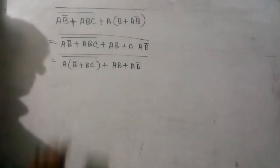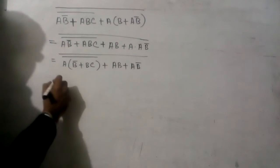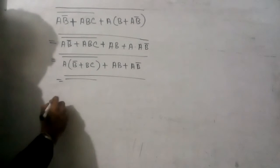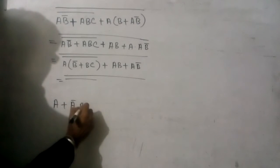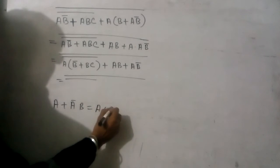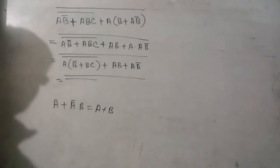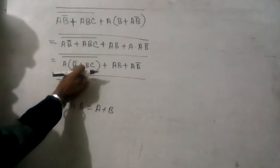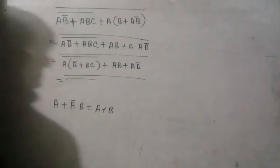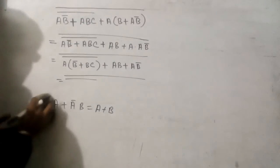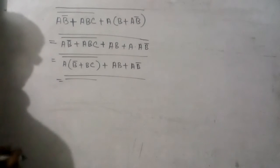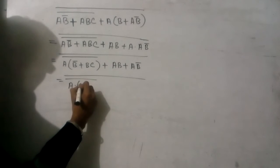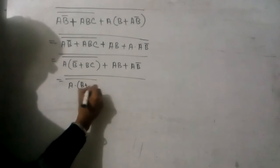You have told to do it here, so we can apply our law. As we know that A plus Ā·B equals A plus B, we can apply this formula here. We can see B plus B·C is there, so B and B's complement — we will write B and then plus C, B̄ plus C. Yes, we have produced a single bracket: A into bracket B̄ plus C.